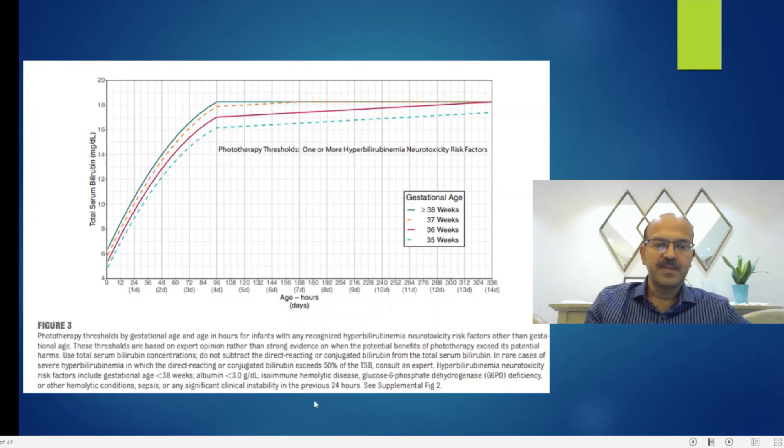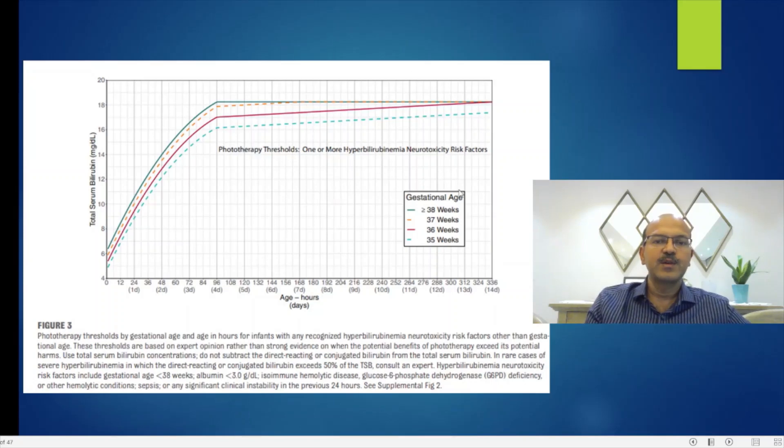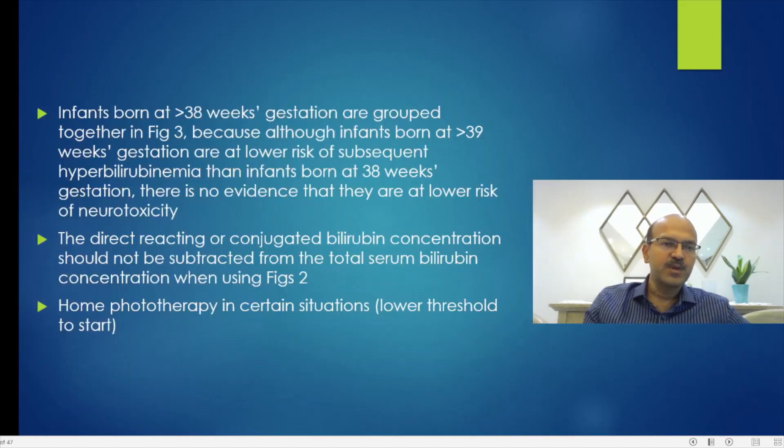The infants born at more than 38 weeks are grouped together in Figure 3. You can see here that you don't have 39 and 40 separately; all are together. Even though their treatment thresholds are different, there is no clear evidence that the neurotoxicity happens at a higher level for the more mature babies. So it's better to be safe and club them together.